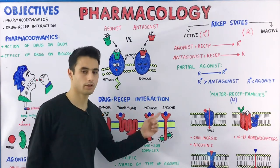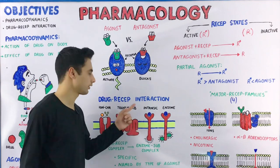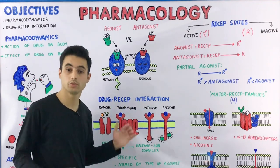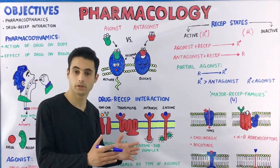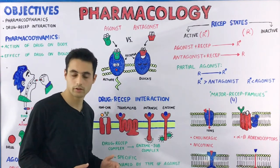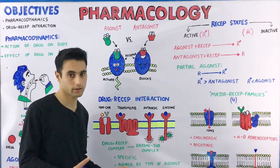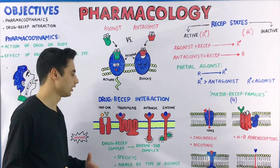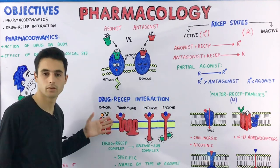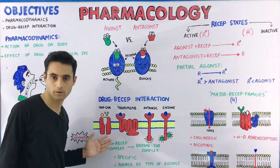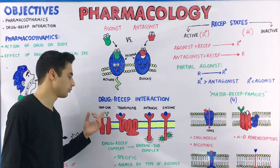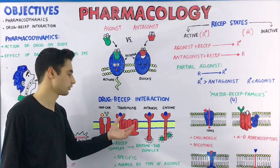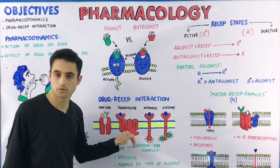Now, what is drug-receptor interaction? Before discussing that, we should know what a receptor molecule is. A receptor molecule is any biological molecule to which a drug can bind, and it can activate or deactivate some kind of biochemical or physiological process inside our body. Receptors are majorly found on the surface of the cell membrane.